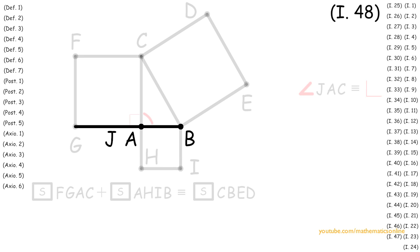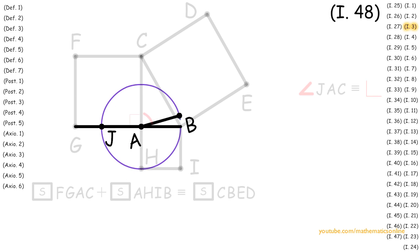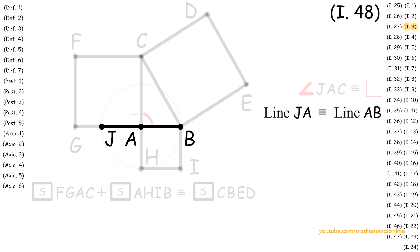Next, with line AB and line JA, we apply Proposition 3 to make line JA congruent to line AB. With Postulate 1, we create line JC.